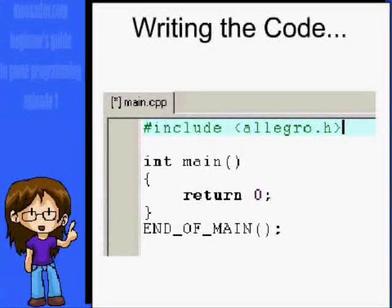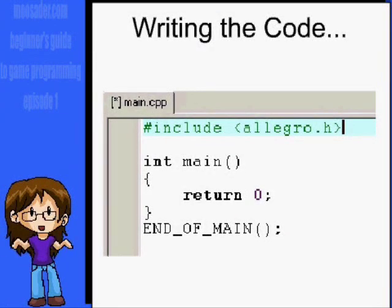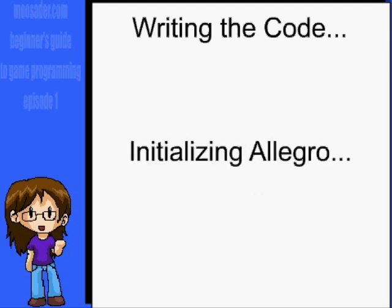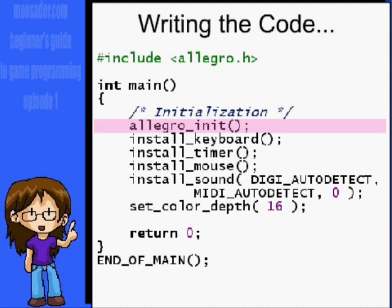First off, at the top of main.cpp, or whatever you choose to name it, you need to put #include <allegro.h>. Initialization needs to happen before you do anything with Allegro in your project. The very first thing should be allegro_init().